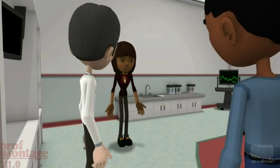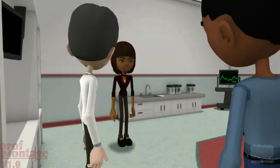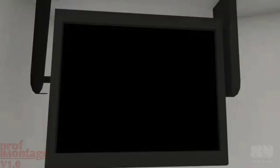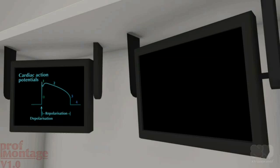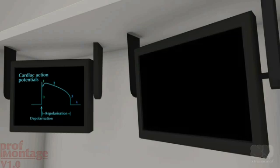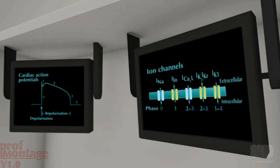Why is there a difference? The cells have differing expression of ion channels. How long the action potential is depends on the activity of various ion channels moving sodium, potassium and calcium in and out of the cell.